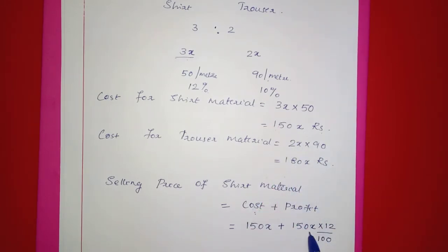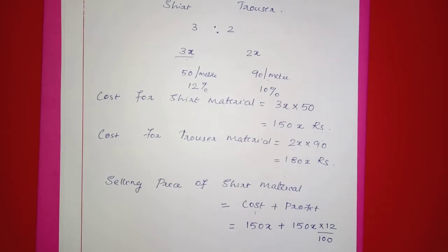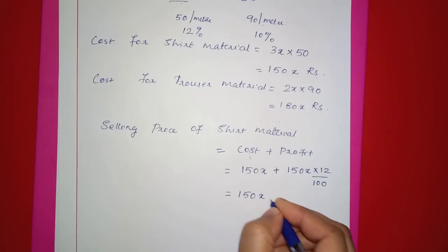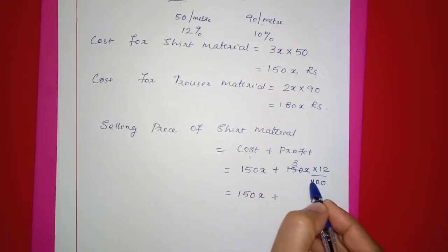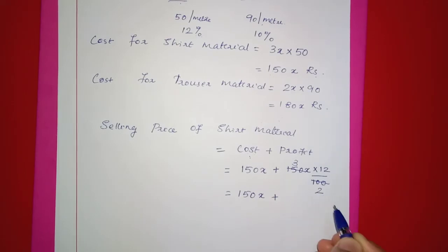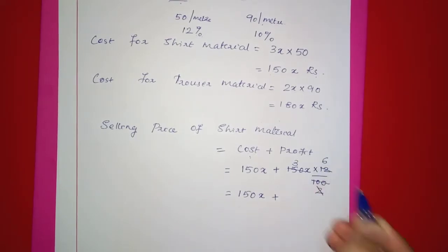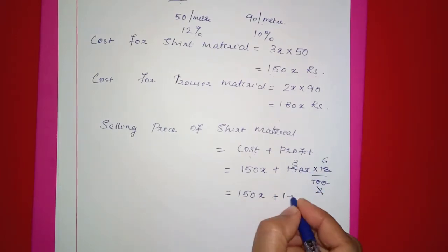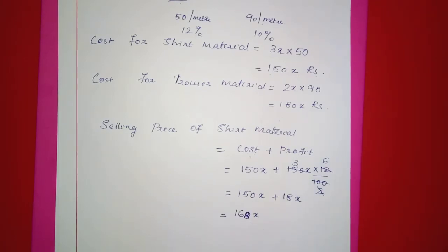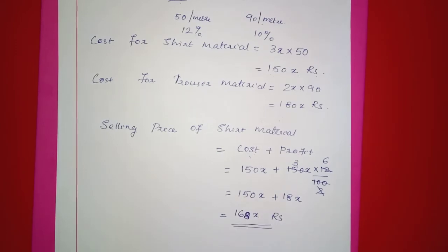We add 150x plus 150x into 12 by 100. That gives us 150x plus 18x, which equals 168x rupees. So the selling price of the shirt material is 168x rupees.